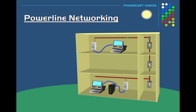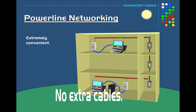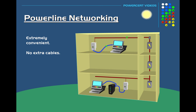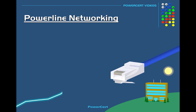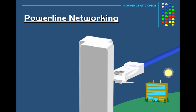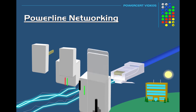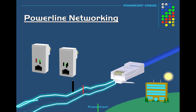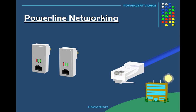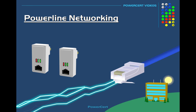This is an extremely convenient option, especially when running new cables is too much of a hassle or if there's too much interference to use Wi-Fi. You can simply use the building's existing electrical wiring to network data. There is no software configuration or real hardware configuration — you just plug in the adapters and the network cables and you're ready to go.